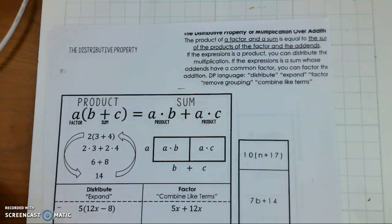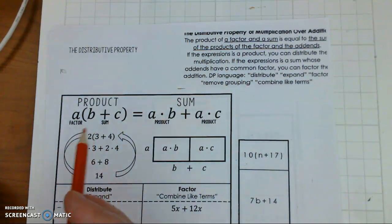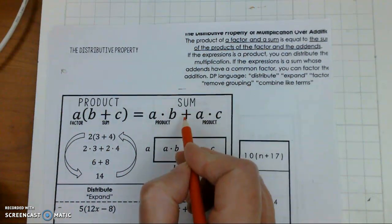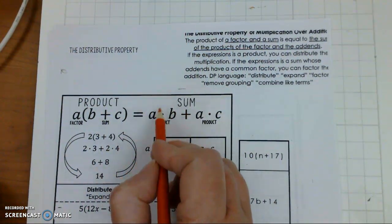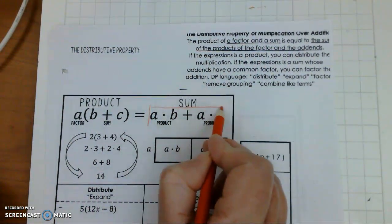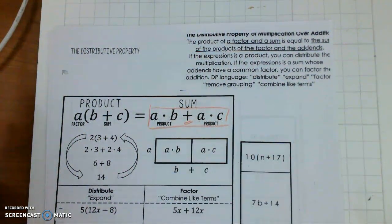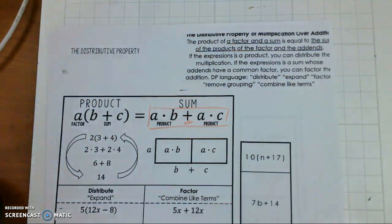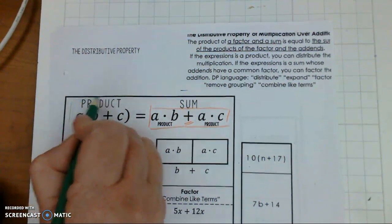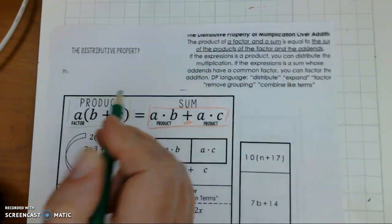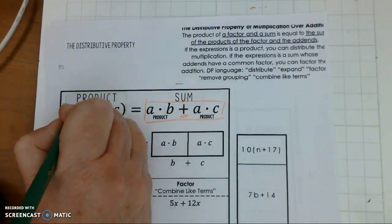So first, when you see this graphic organizer, you are going to see this side is called sum. And it is called a sum because it uses the addition symbol. This side is considered a product because we are multiplying.